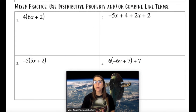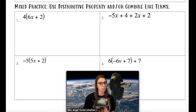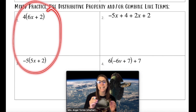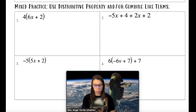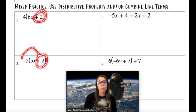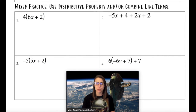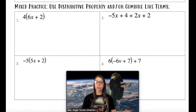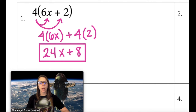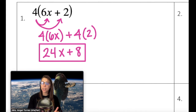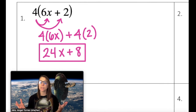For our mixed practice, I included a mixture of Distributive Property and Combining Like Terms. Remember our goals: with Distributive Property, the goal is to get the constant out of the group; with Combining Like Terms, the goal is one variable term and one constant. Go ahead and try these four problems on your own. Let's start with number 1: I used Distributive Property, multiplied 4 by 6x and 4 by 2, and ended up with 24x plus 8 — constant is free and goal achieved.